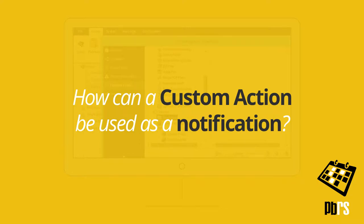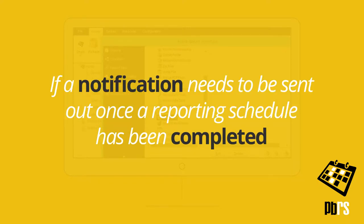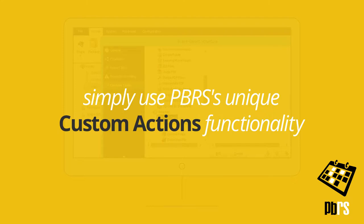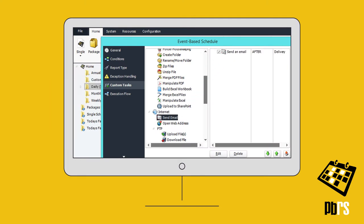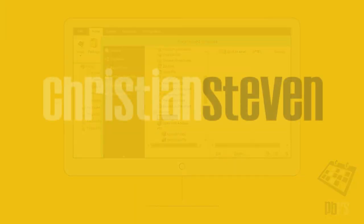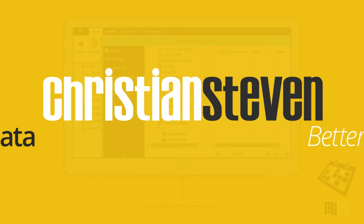How can a custom action be used as a notification? If a notification needs to be sent out once a reporting schedule has been completed, simply use PBRS's unique custom actions functionality. On the custom tasks screen, choose the send email action to run after the selected report schedule has been delivered.